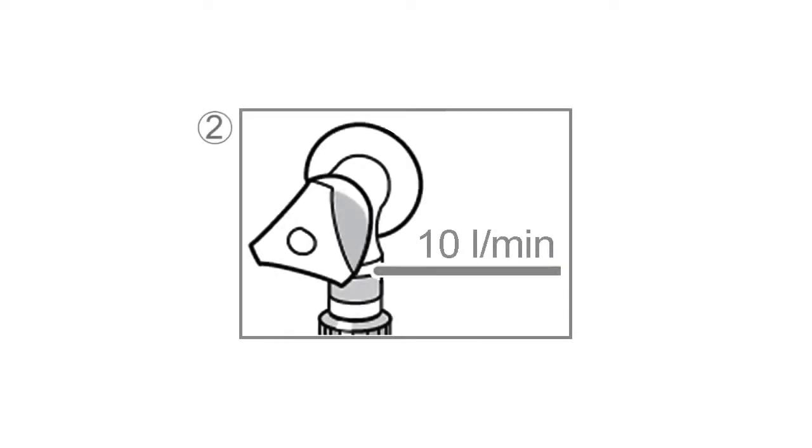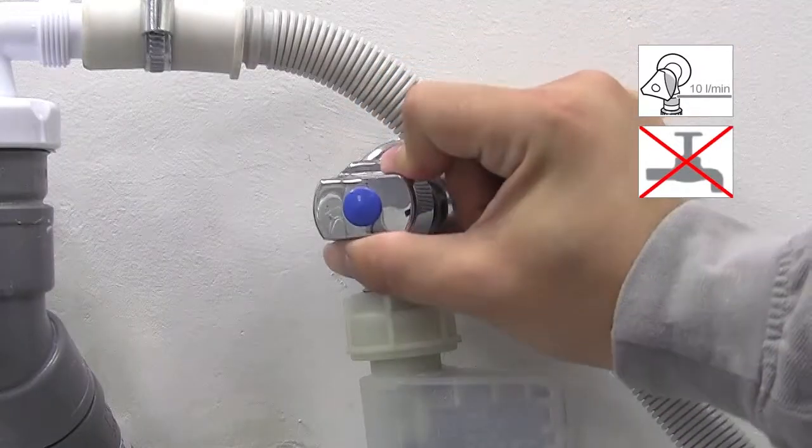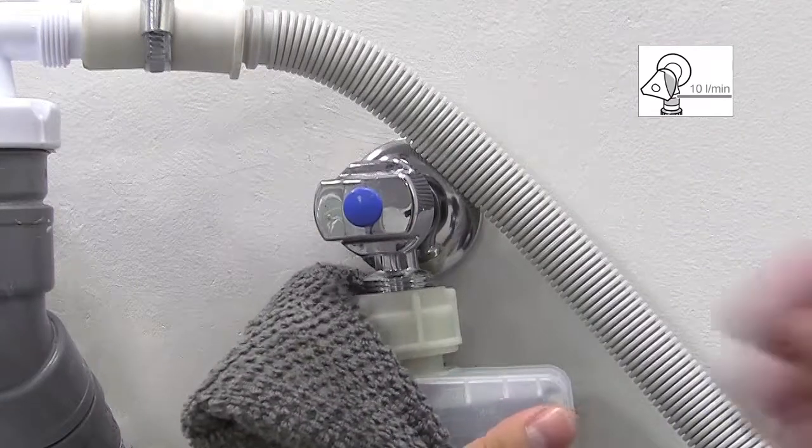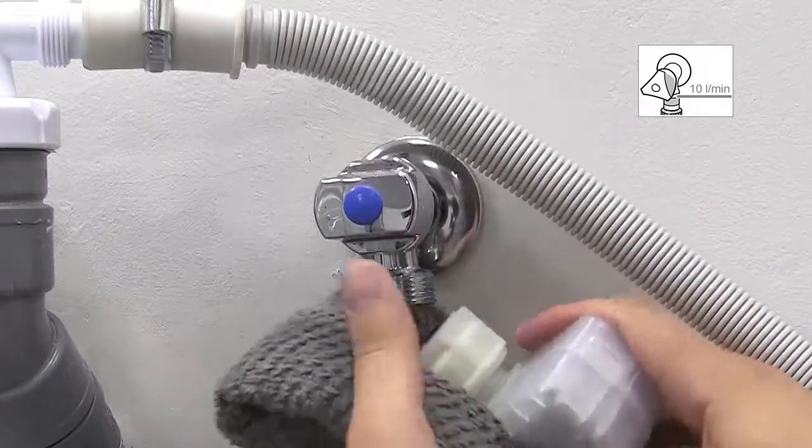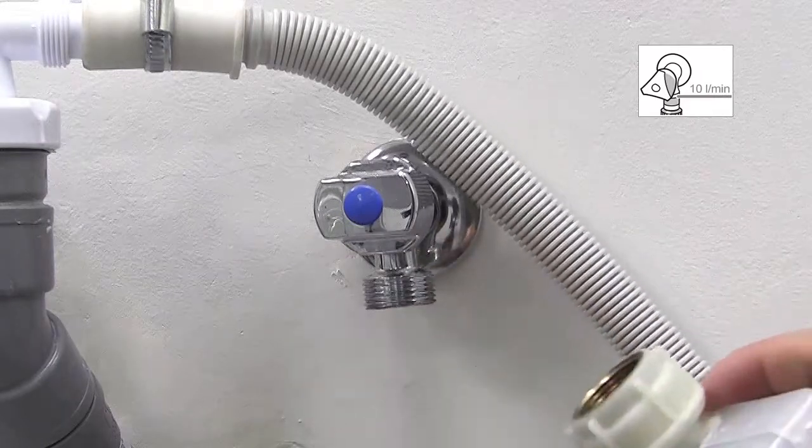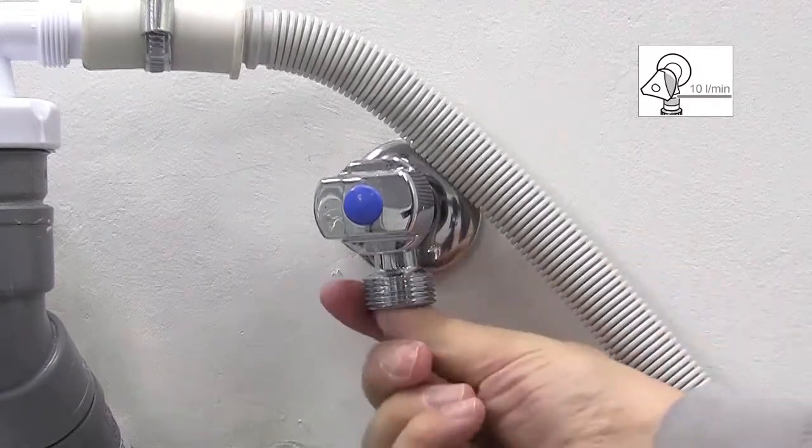The second step is to check your water supply to the appliance, which should be 10 litres per minute. Turn off the water supply by twisting clockwise. Remove the inlet hose by using a towel as shown and check there is no water still flowing.